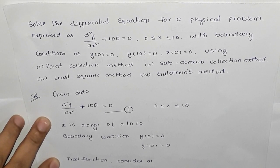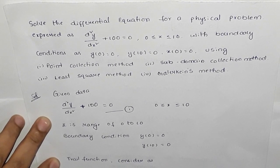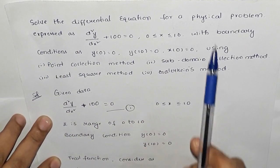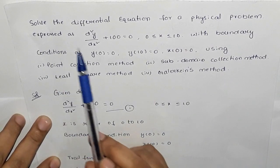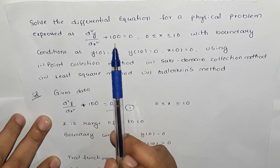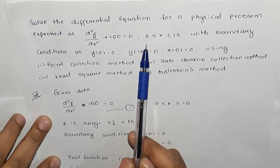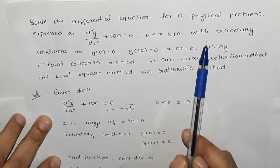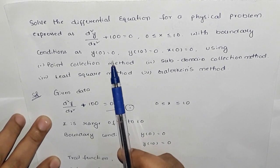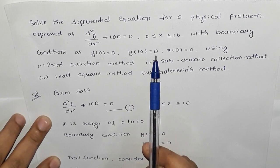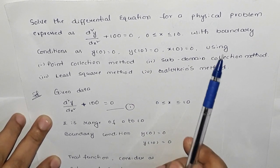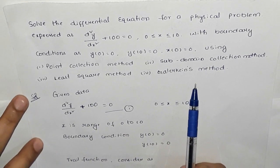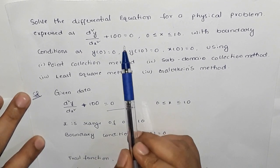First, we will solve the differential equation representing a physical problem expressed as d²y/dx² + 100 = 0, with limits 0 ≤ x ≤ 10, and boundary conditions y(0) = 0 and y(10) = 0. We will use all four methods to solve this differential equation.